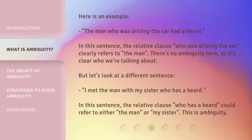Here is an example: 'The man who was driving the car had a beard.' In this sentence, the relative clause 'who was driving the car' clearly refers to the man. There's no ambiguity here, as it's clear who we're talking about.